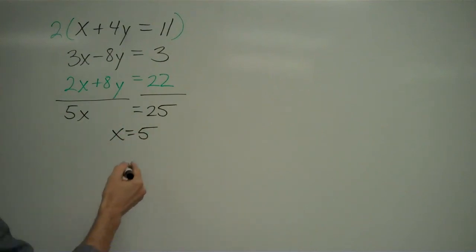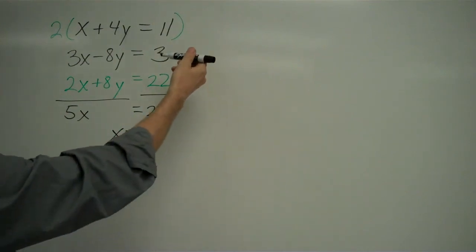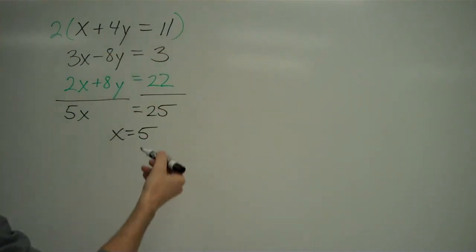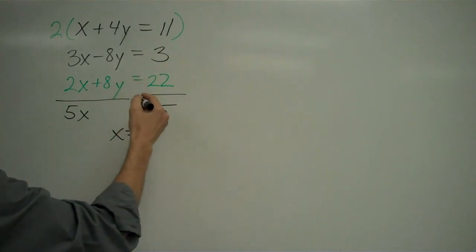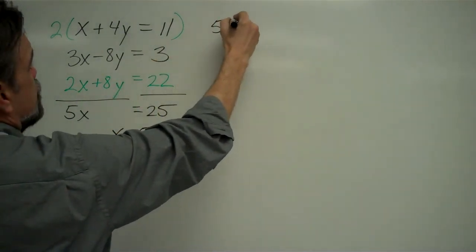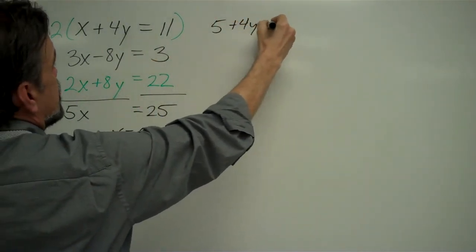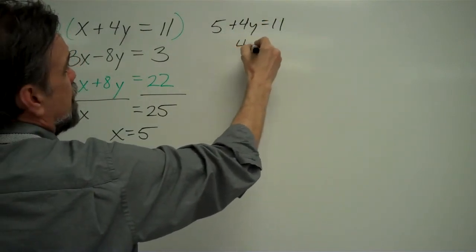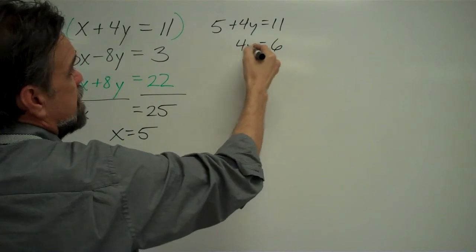I still have to solve for y. So I take my 5 and I substitute x for 5 in either one of these equations. I'm going to go for the top one because it looks a little bit easier. This gets me 5 plus 4y equals 11.